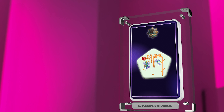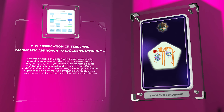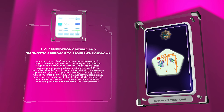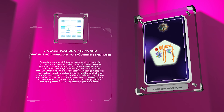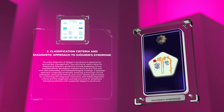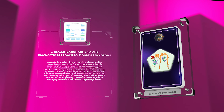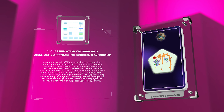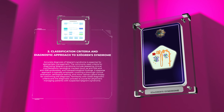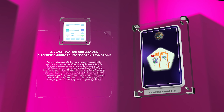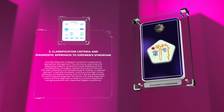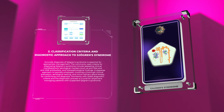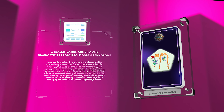Accurate diagnosis of Sjogren's Syndrome is essential for appropriate management. The commonly used criteria for diagnosing Sjogren's Syndrome include assessing clinical manifestations, serological markers such as anti-SSA and anti-SSB antibodies, and histopathological findings. A stepwise approach is typically employed, involving a thorough clinical evaluation, serological testing, and minor salivary gland biopsy for confirming the diagnosis.